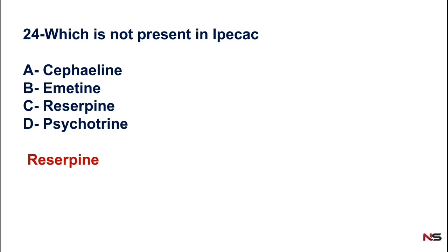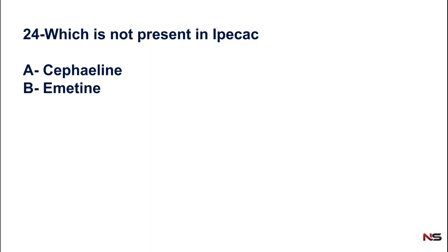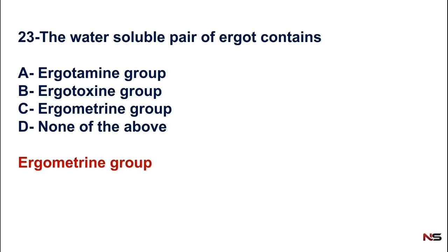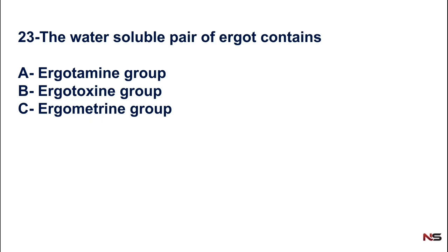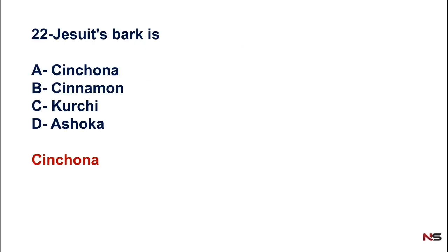Reserpine is a constituent of Rauwolfia — it is an indole alkaloid present in Rauwolfia serpentina. One important use of reserpine is as an anti-hypertensive agent. Before moving to the next question, note that ergot is also an indole alkaloid, and Cinchona — which appears in this question — is a quinoline alkaloid. All types of alkaloids are covered in the previous videos; check the description box for links.